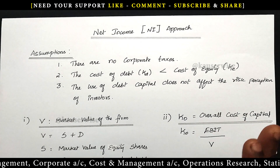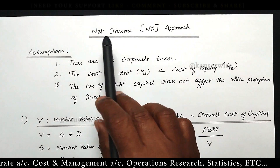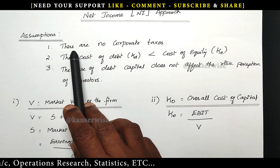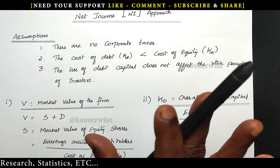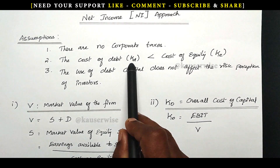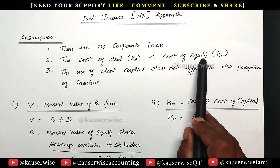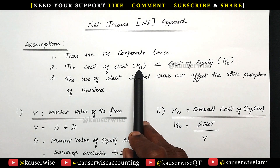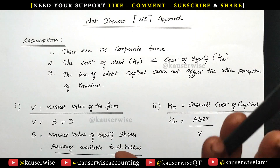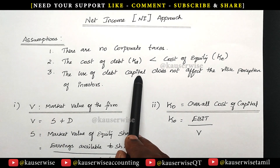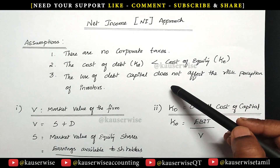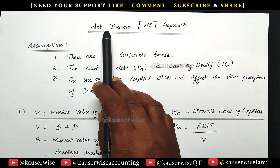Before we see the numerical problem, let us understand the basic concepts about the net income approach. In the net income approach there are a few assumptions. Number one: there are no corporate taxes, so corporate tax is nil. Second: the cost of debt is lesser than the cost of equity — KD refers to cost of debt and KE refers to cost of equity. Third: the use of debt capital does not affect the risk perception of investors. These are the important assumptions on which we are going to solve the problem.